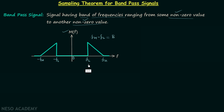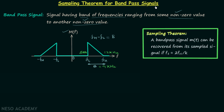So bandwidth is this band of frequencies: B equals FH minus FL. For example, if FH equals 12 kilohertz and FL equals 8 kilohertz, then 12 minus 8 equals 4 kilohertz, so the bandwidth equals 4 kilohertz in this case. Now we will move on to the sampling theorem for band-pass signals.